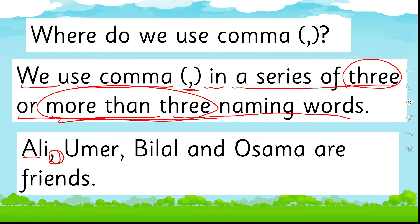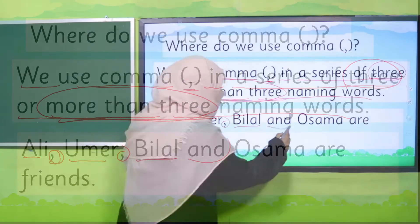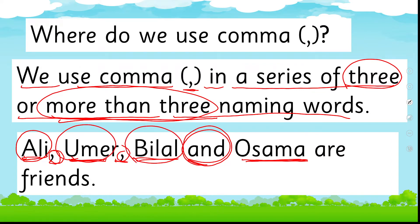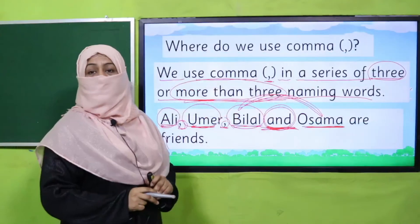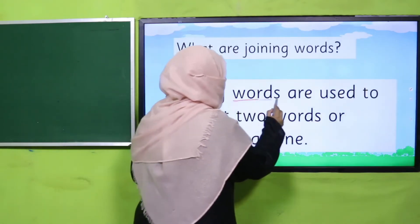Whenever there are three or more naming words, we join them by putting comma — for example: Ali, Umar, Bilal, and Osama. A comma is basically a small pause; it means the sentence is going on. We separate names by putting commas, and before the last naming word we use 'and.' So this 'and' is joining whatever is written before it and whatever is written after it — it joins two parts of the sentence. This is how we use joining words.